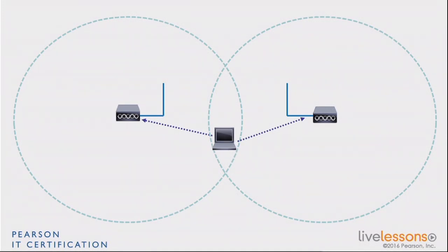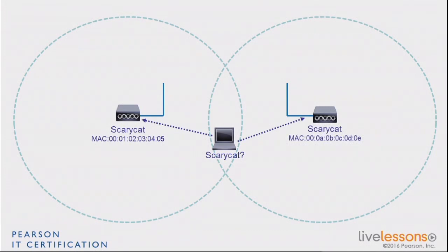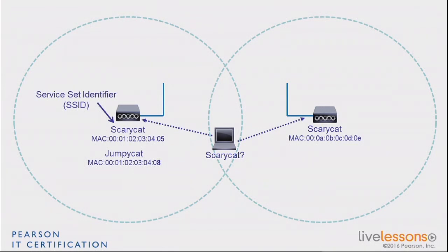Here you have two access points. If you want to look for the SSID name "ScaryCat" and you have these two access points returning their MAC addresses, you have this vocabulary: the SSID is the string, and the MAC address is the BSSID.